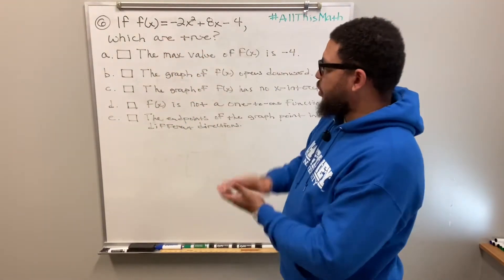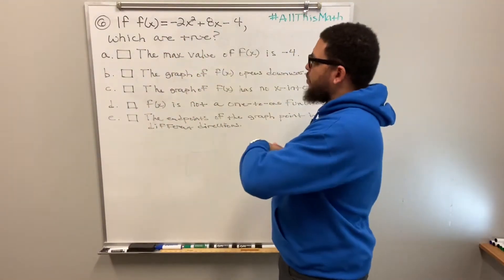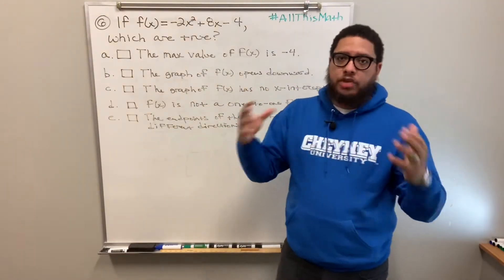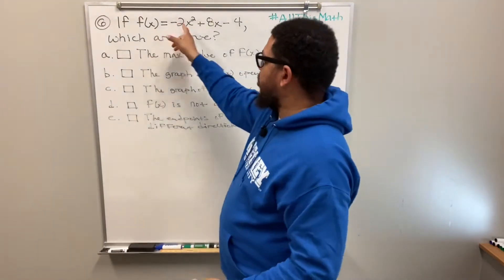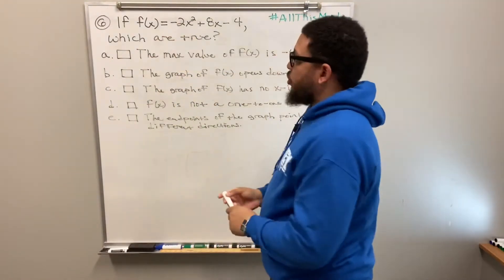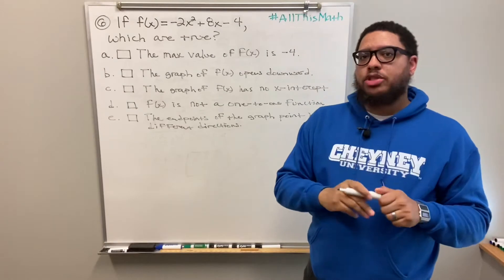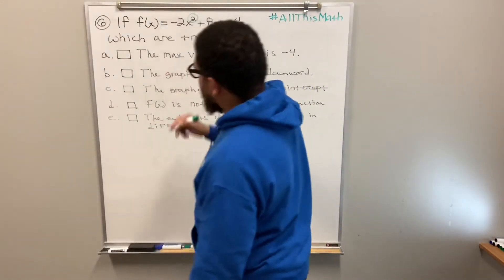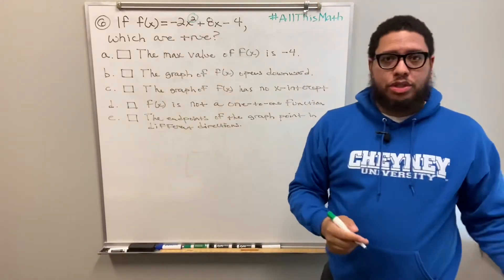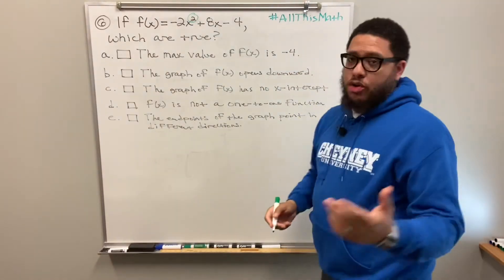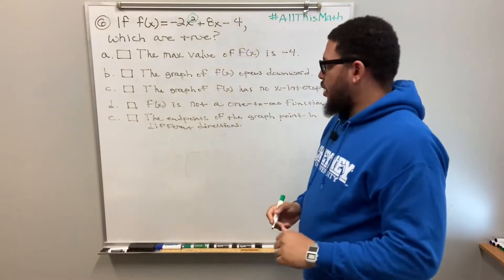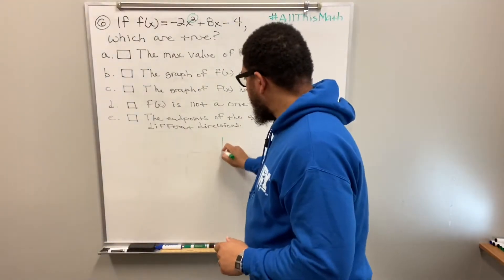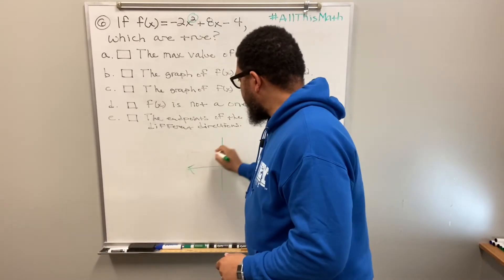We just go through one at a time based on what we know about how to graph quadratic equations, because that's what this is — a quadratic. How do I know it's a quadratic? Because the biggest exponent you see is a two. That's how I know. Now another thing I know is that because it's a quadratic, here's a quick sketch of what the graph is going to look like.